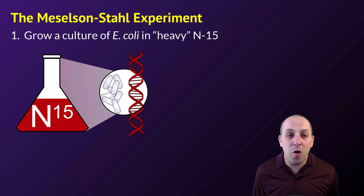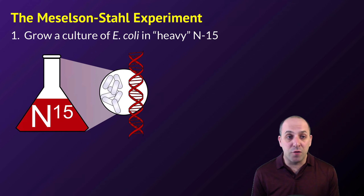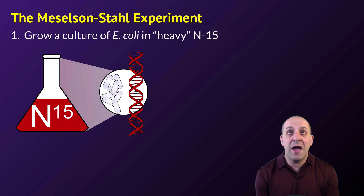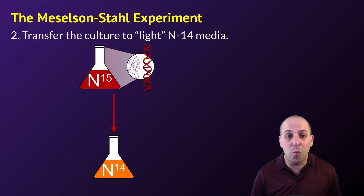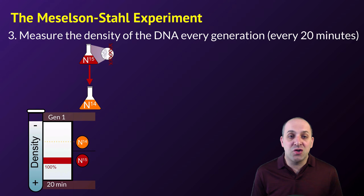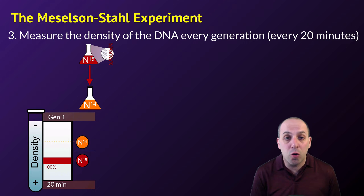What Meselson and Stahl did was to grow E. coli bacteria in a media that contained an isotope of nitrogen with an additional neutron, which we'll call heavy nitrogen, which has one additional neutron compared to the most common isotope of nitrogen, or nitrogen-14. After they'd grown this bacteria long enough, all of the DNA in the culture had incorporated this heavy nitrogen. They then transferred the culture to a media that contained regular, or light, nitrogen-14, and interrupted the process of replication after every generation — which for bacteria is only every 20 minutes — using density centrifugation to look at the amounts of nitrogen-14 and nitrogen-15 incorporated into their DNA.